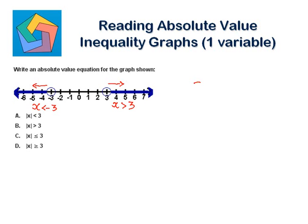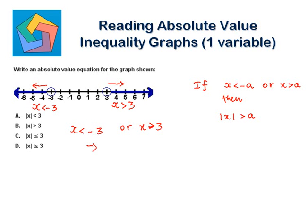According to the rules, if x is less than negative a or x is greater than a, then we should have absolute of x greater than a. So, x less than negative 3 or x greater than 3 implies absolute of x should be greater than 3. We used greater than and less than because there were open circles — when circles are not filled, we take only the less than or greater than inequality, not less than or equal to or greater than or equal to. So our answer is: absolute of x is greater than 3.